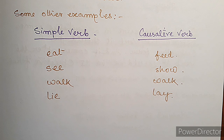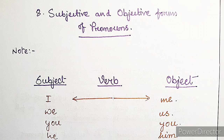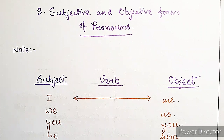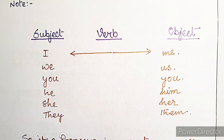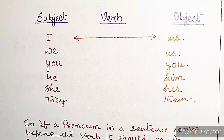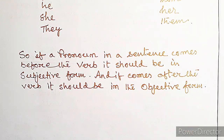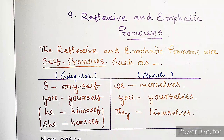Now the subjective and objective forms of pronouns. 'I' is the subjective form and 'me' is its objective form. Then: we/us, you/you, he/him, she/her, they/them. If a pronoun comes before the verb in a sentence, it should be in subjective form; if it comes after the verb, it should be in its objective form.